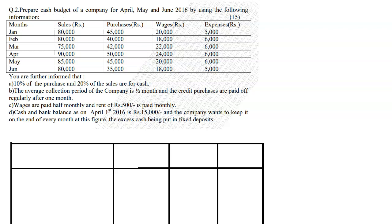Prepare a cash budget of a company for April, May and June 2016 using the following information. We have sales which are receipts, purchases which are payments, wages which is a payment, and expenses which is a payment.